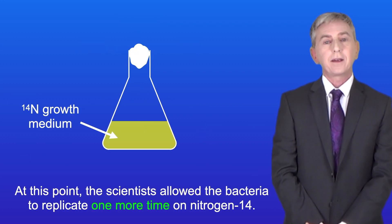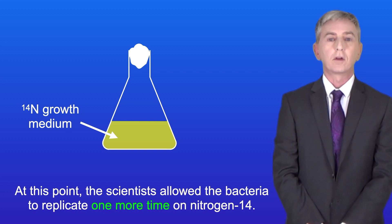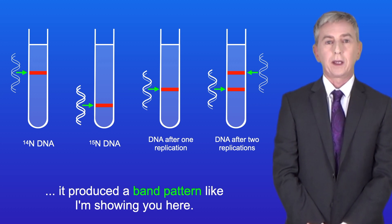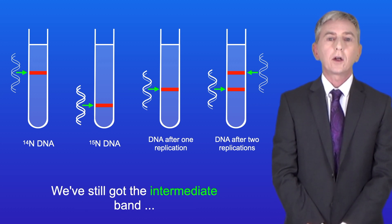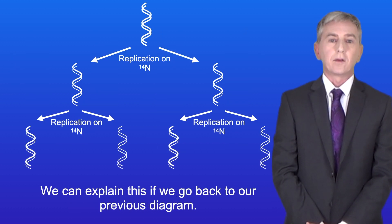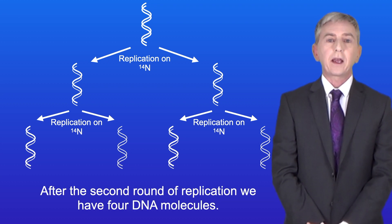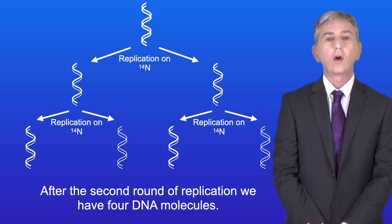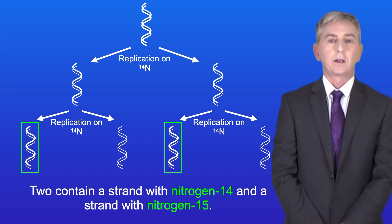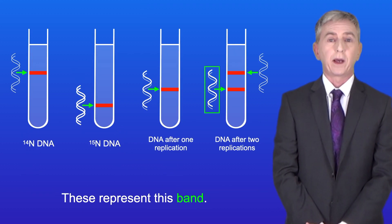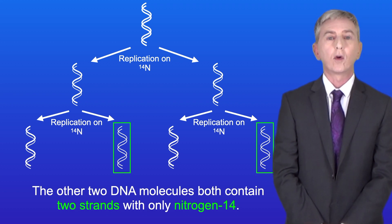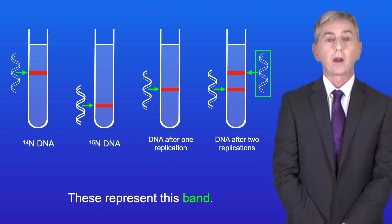The scientists then allowed the bacteria to replicate one more time on nitrogen-14. When the DNA was extracted and spun, it produced a band pattern with the intermediate band still present but now also another band near the top of the tube. After this second round of replication there are four DNA molecules. Two contain one strand with nitrogen-14 and one strand with nitrogen-15, representing the intermediate band. The other two both contain two strands with only nitrogen-14, representing the new band near the top.